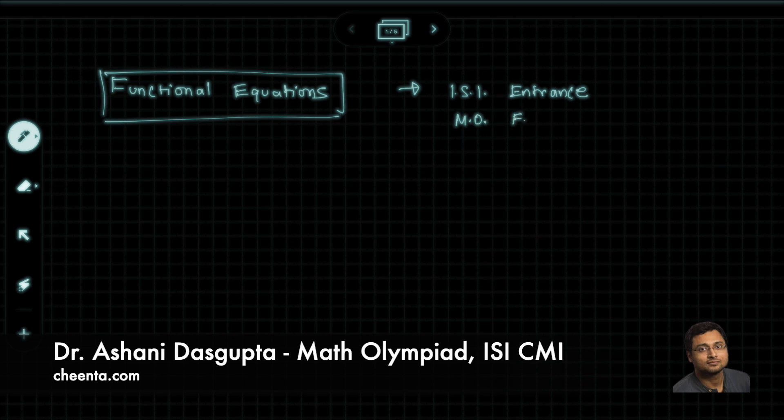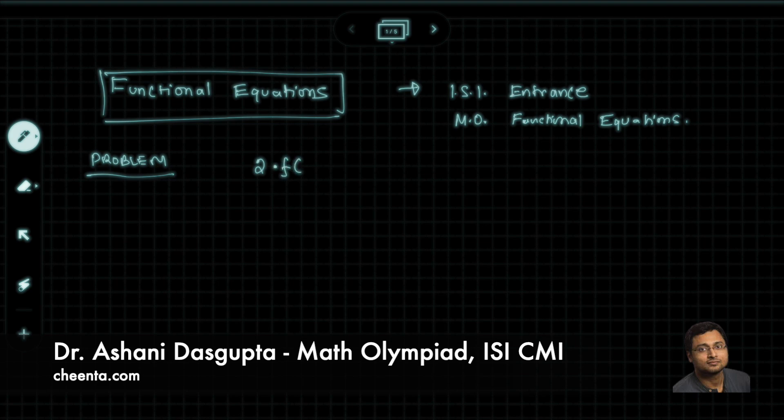So let me explain what the problem is. We are given this equation: 2 times f(x) plus 3 times f(-x) is equal to 15 minus 4x.